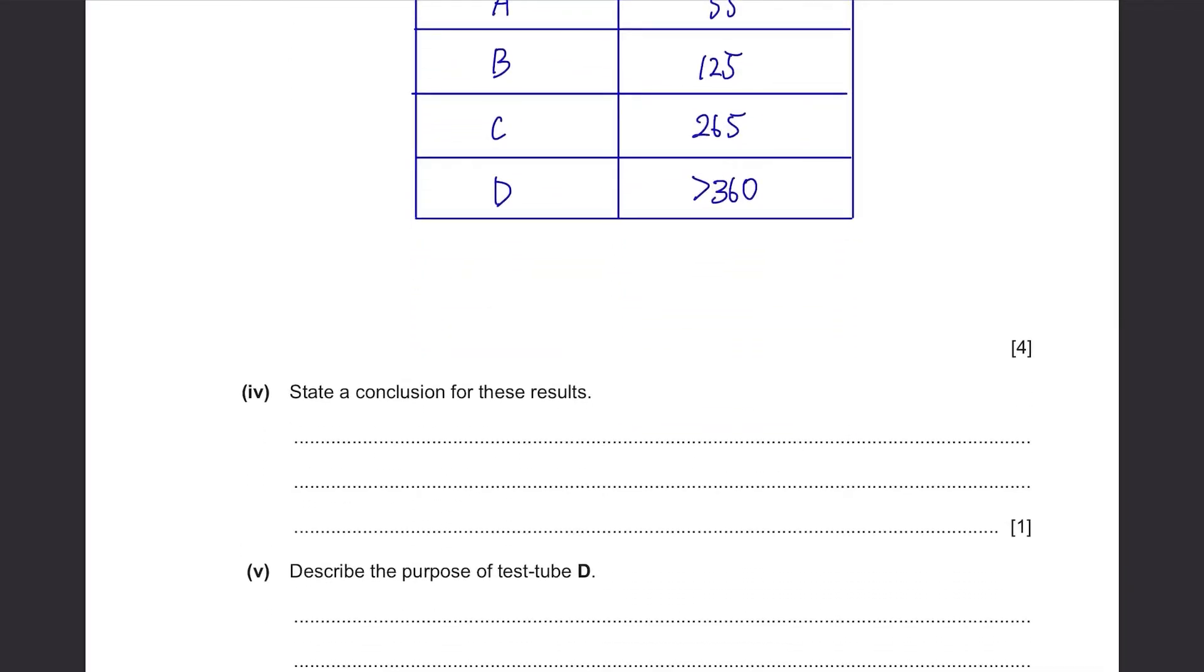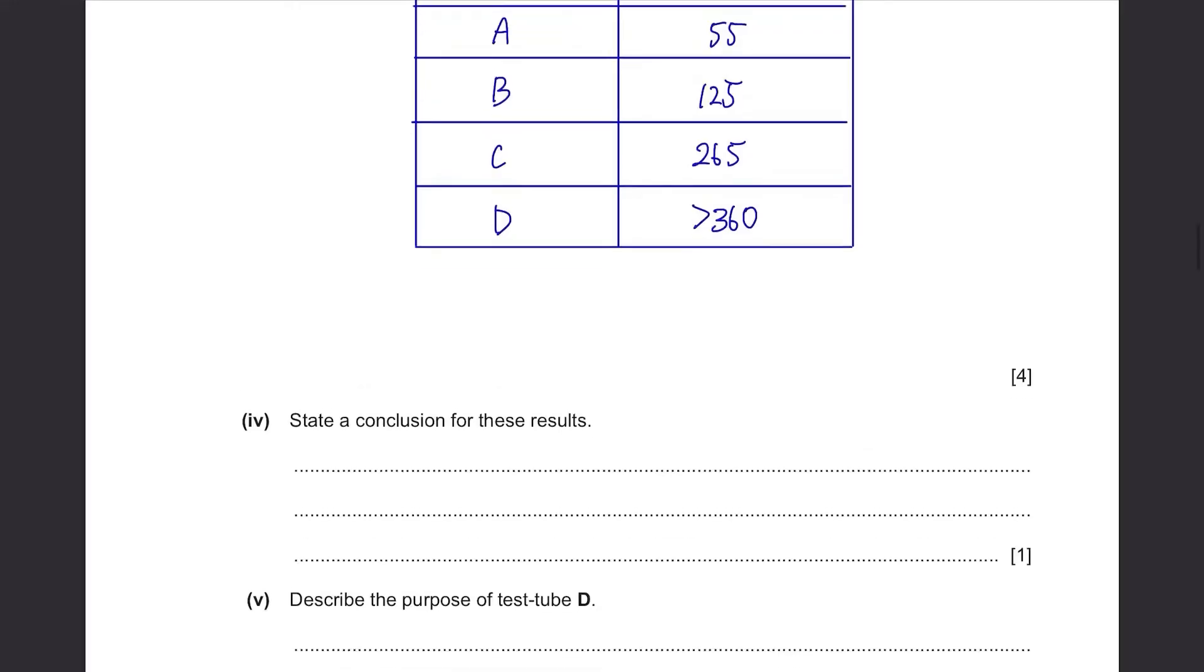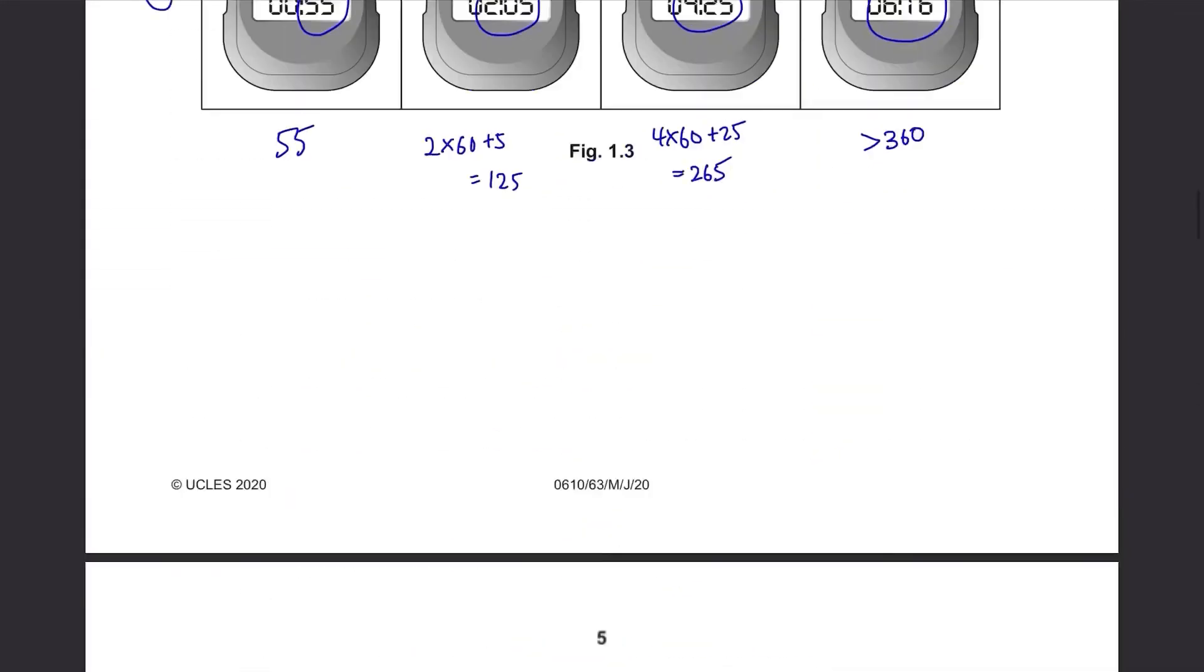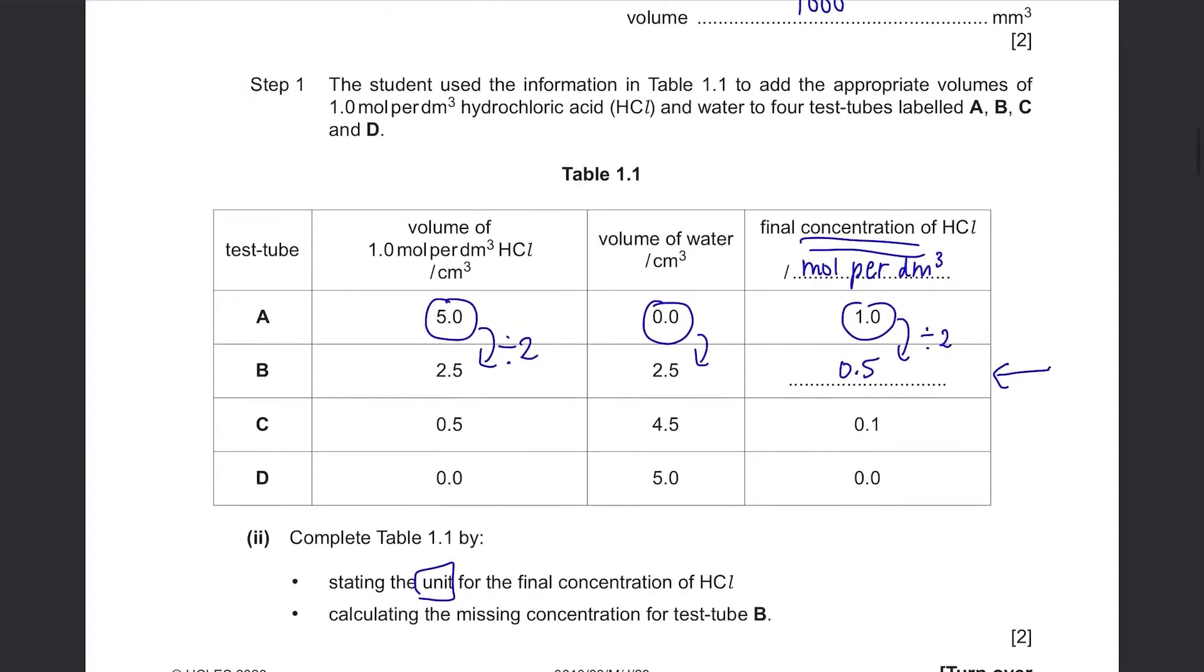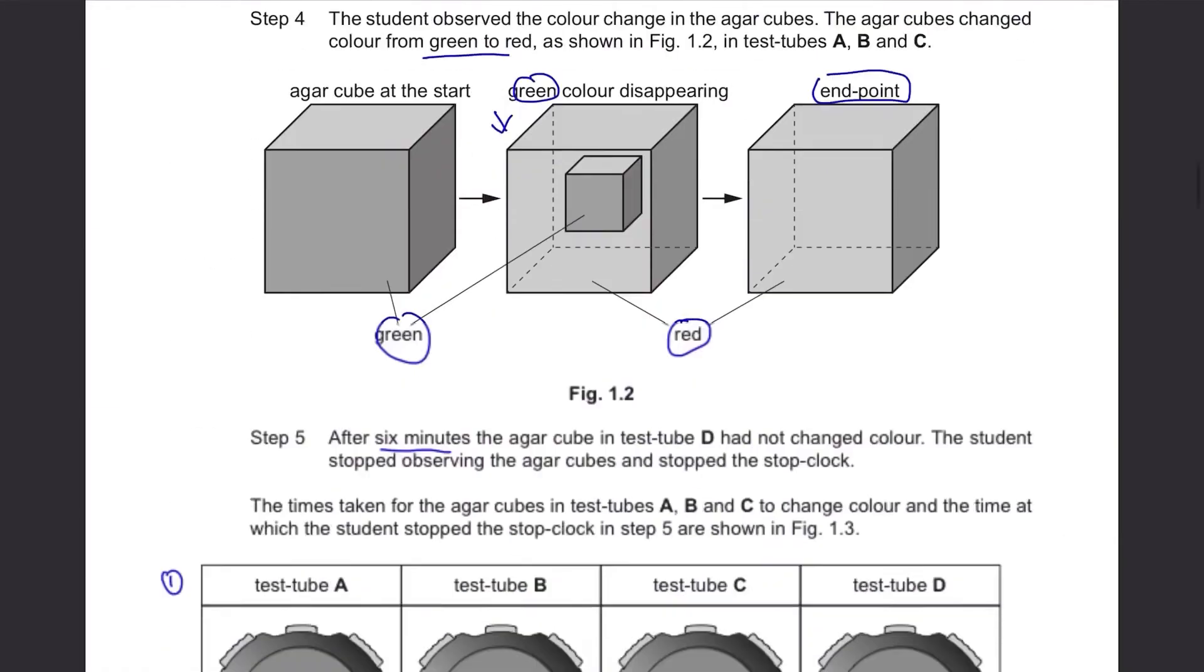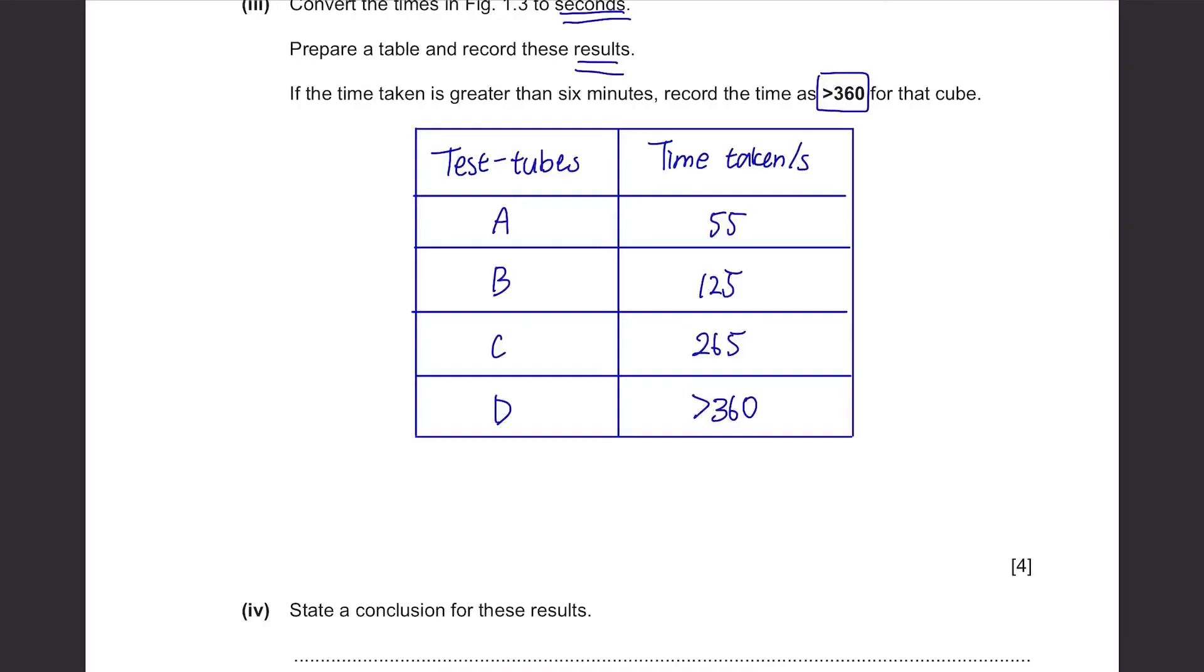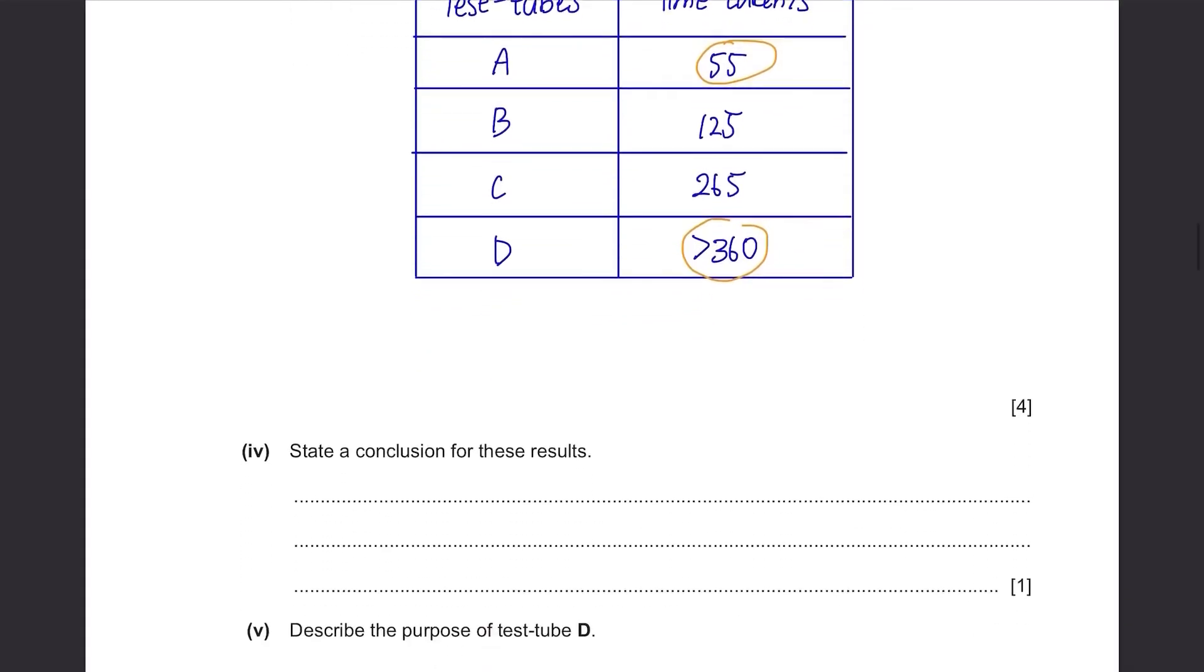State the conclusion for these results. Well, to state the conclusion, we first have to go back and remind ourselves what this test tube stands for. So test tube A had the highest concentration. It was 1.0. Then as it went down, the concentration decreased until it became 0.0. So going back to the table, we can see that test tube A took the shortest time and test tube D took the longest time. This means that the higher the concentration, the faster it diffuses or it just takes the shortest time.